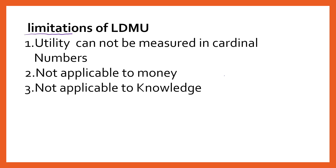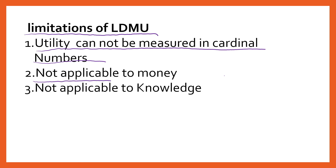Let us discuss the limitations of the law of diminishing marginal utility. The basic limitation is that utility cannot be measured in cardinal numbers as it is a subjective concept. The law is not applicable to money — if a person earns more and more money, utility will never decrease; it will increase. Similarly, it is not applicable to knowledge — when a person gains more and more knowledge, utility is going to increase and will never decrease.